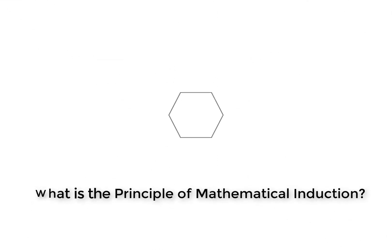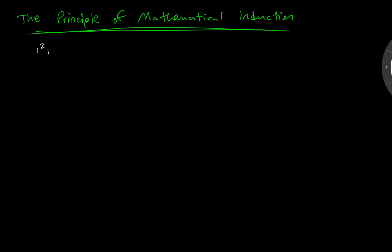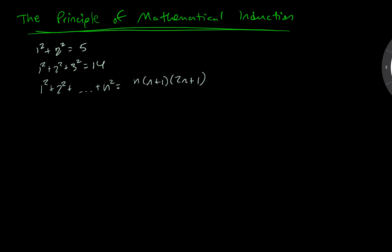I was playing around with some numbers and I think I noticed some sort of pattern. For example, when I had 1 squared plus 2 squared I end up with 5, and when I add up 1 squared plus 2 squared plus 3 squared I get 14. I think if I add up the first n squares I get n times n plus 1 times 2n plus 1 all over 6.